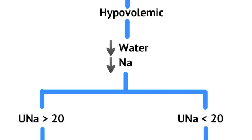So how do you differentiate between the causes of hypovolemic hyponatremia? You look at urine sodium level. If urine sodium is greater than 20, the body is trying to spill out sodium even though you're dehydrated — something is telling the kidneys to lose sodium and water. On the other hand, if urine sodium is less than 20, your body is trying to retain sodium, recognizing it's dehydrated and retaining sodium to keep intravascular volume up.